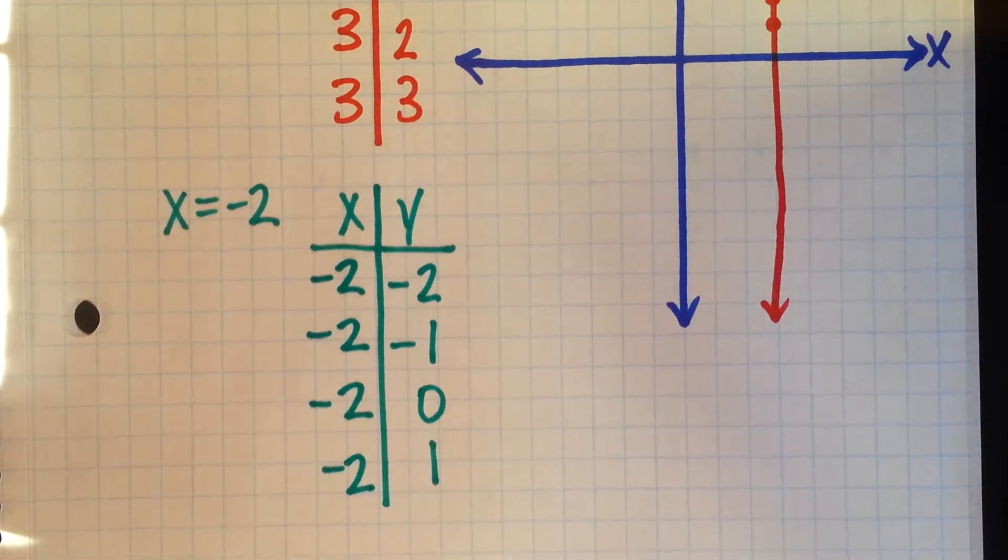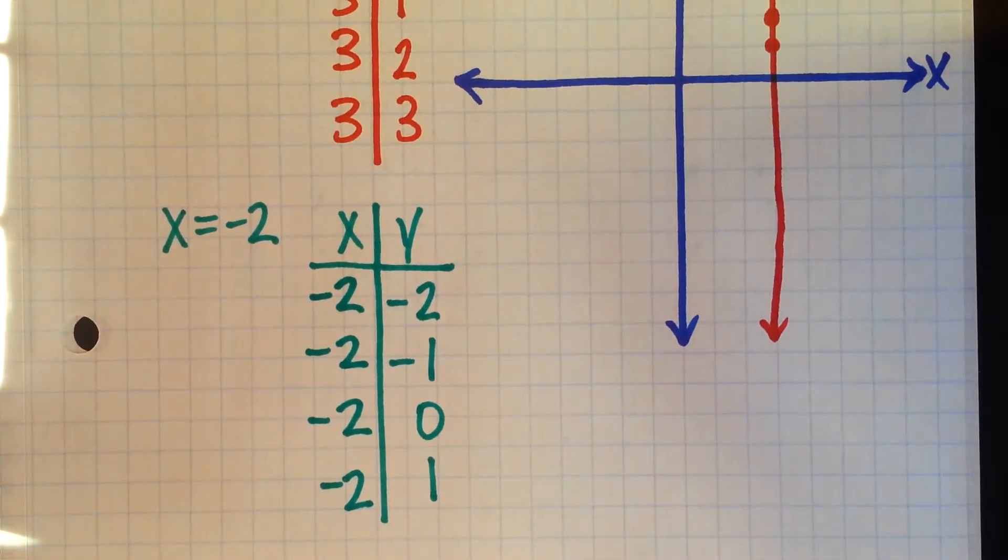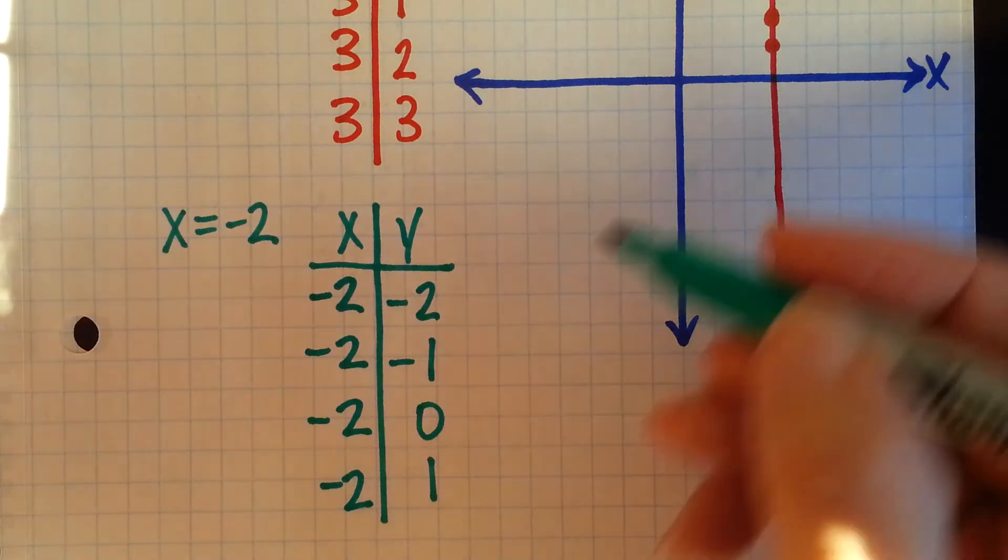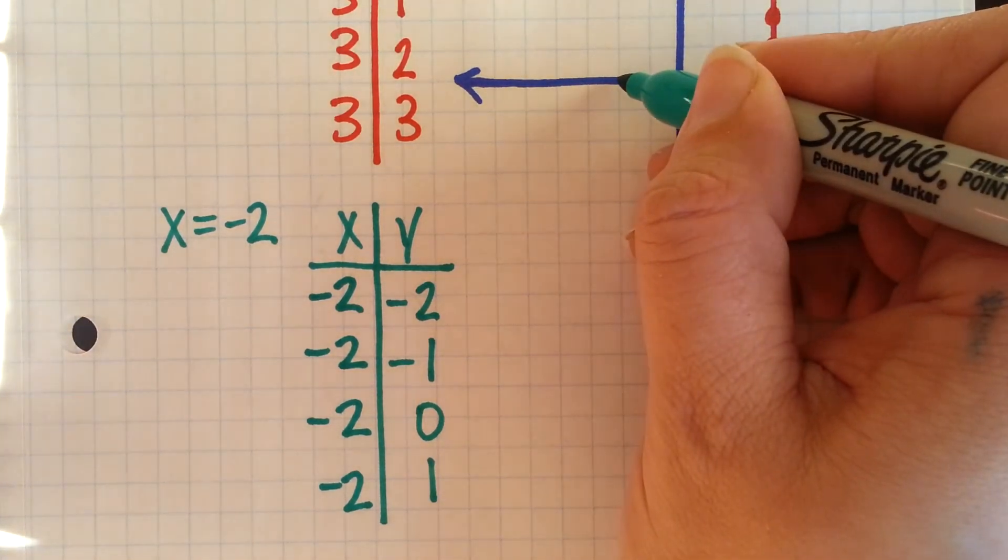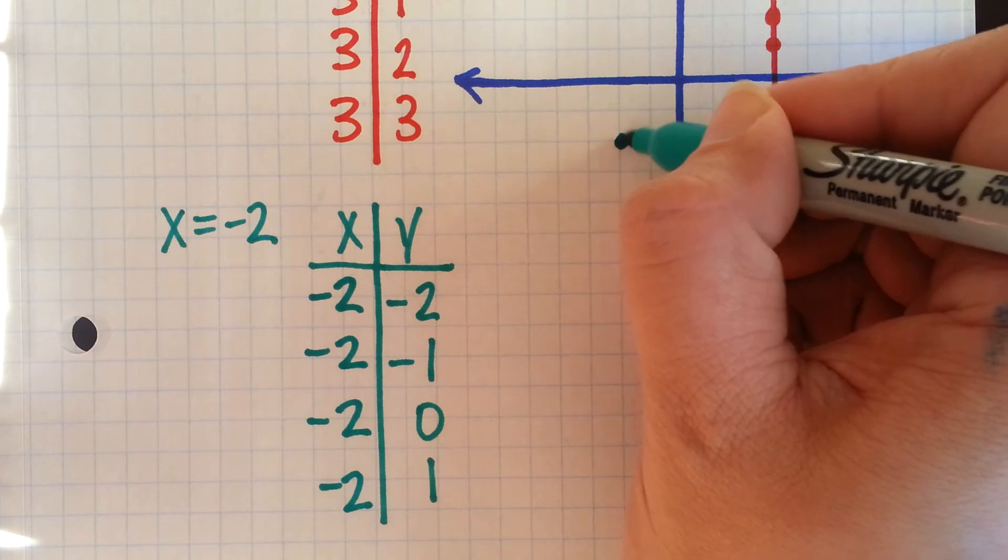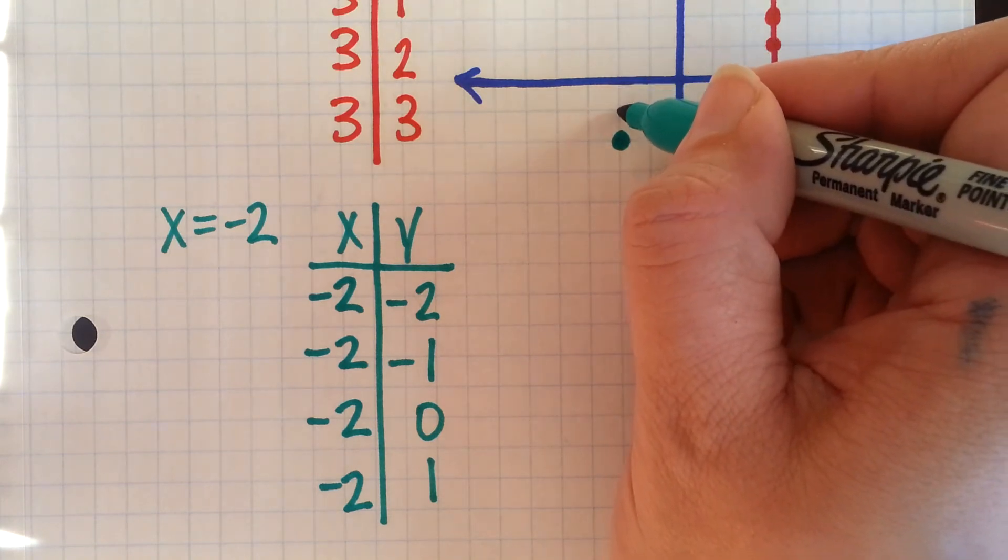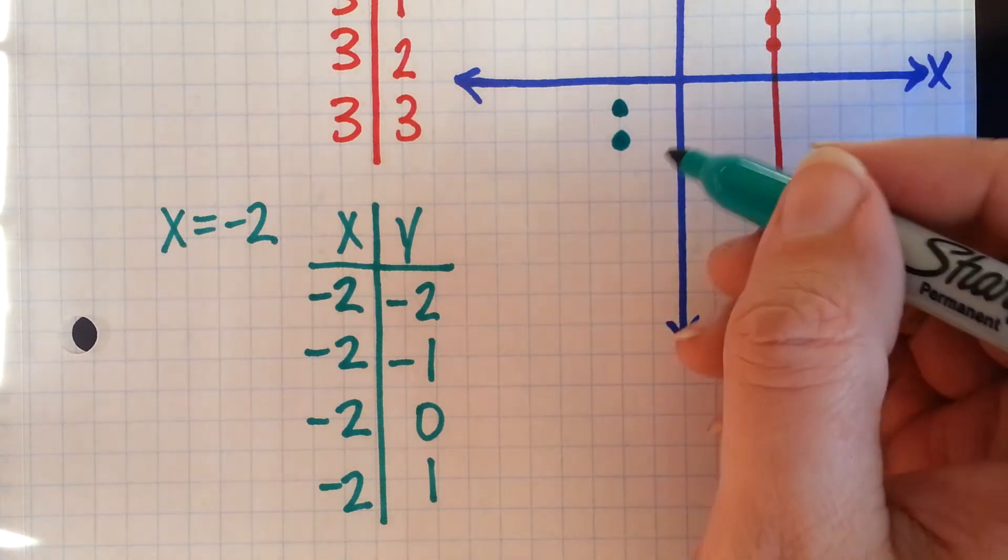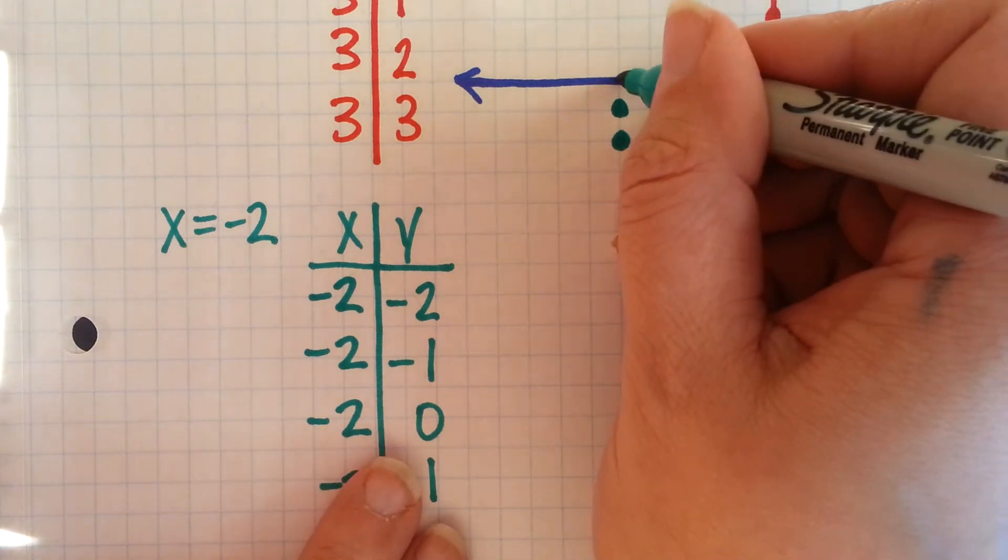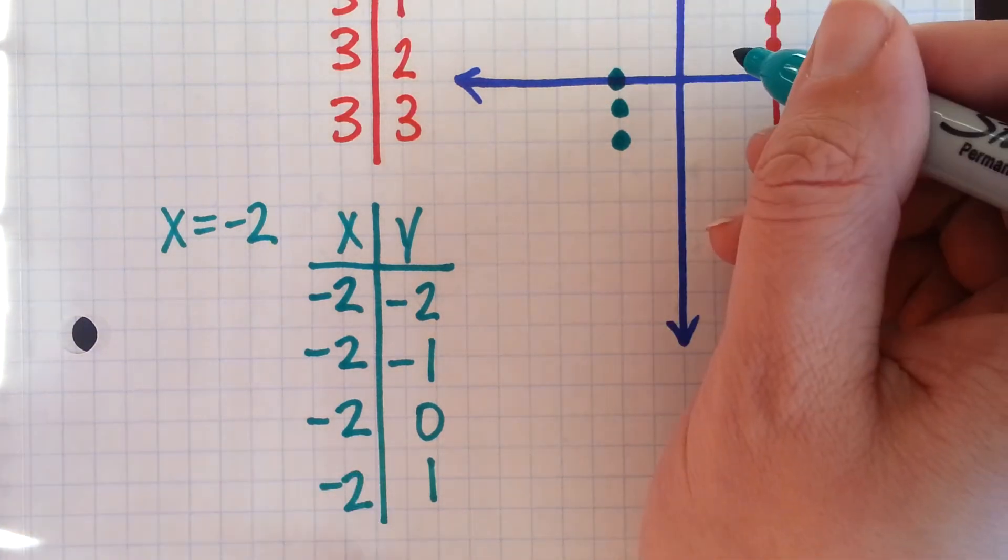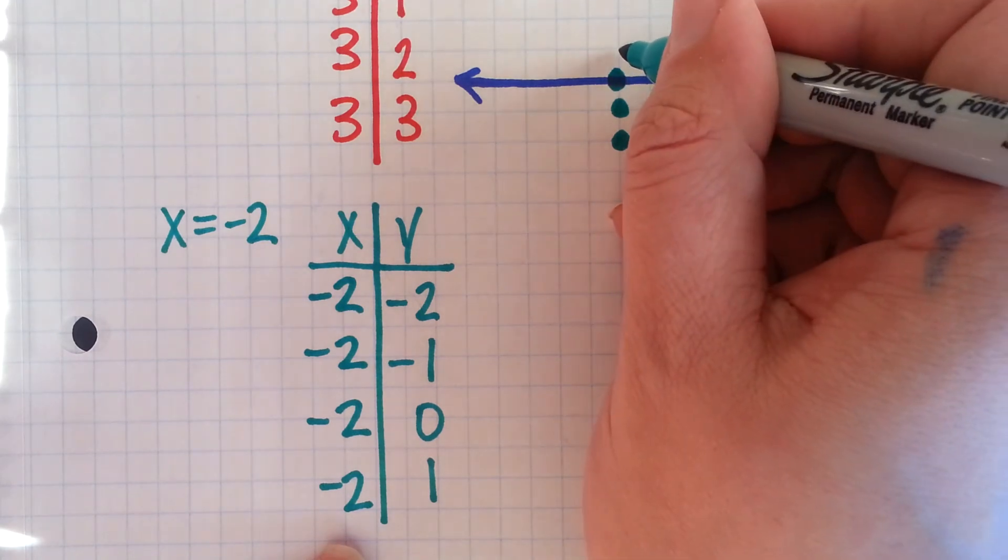So let's go graph those points. See if we can graph this line. We have negative 2, negative 2; negative 2, negative 1; negative 2, 0; and negative 2, positive 1.